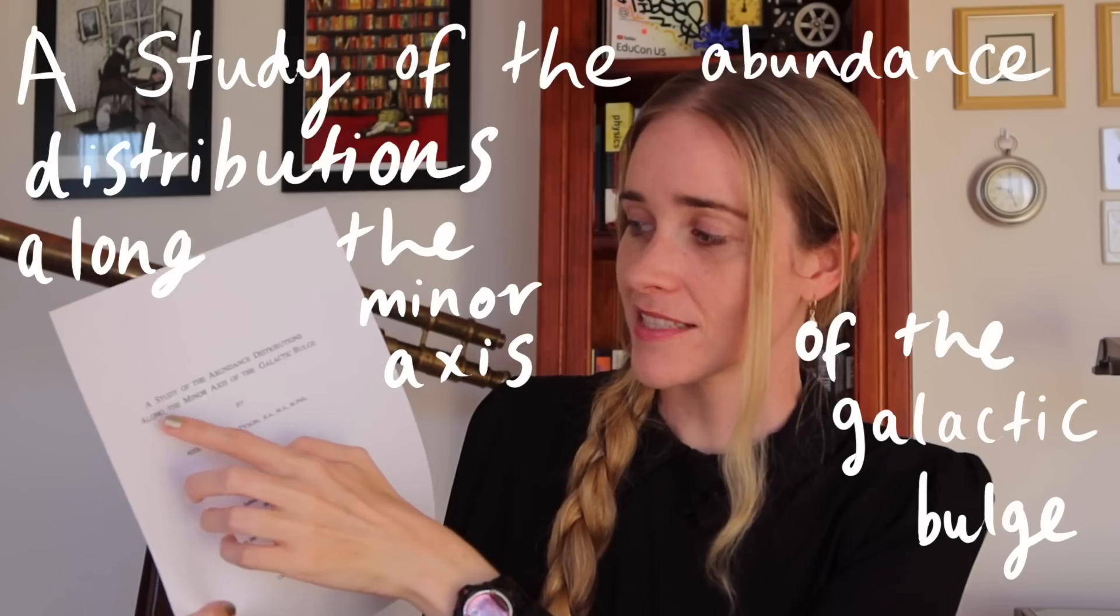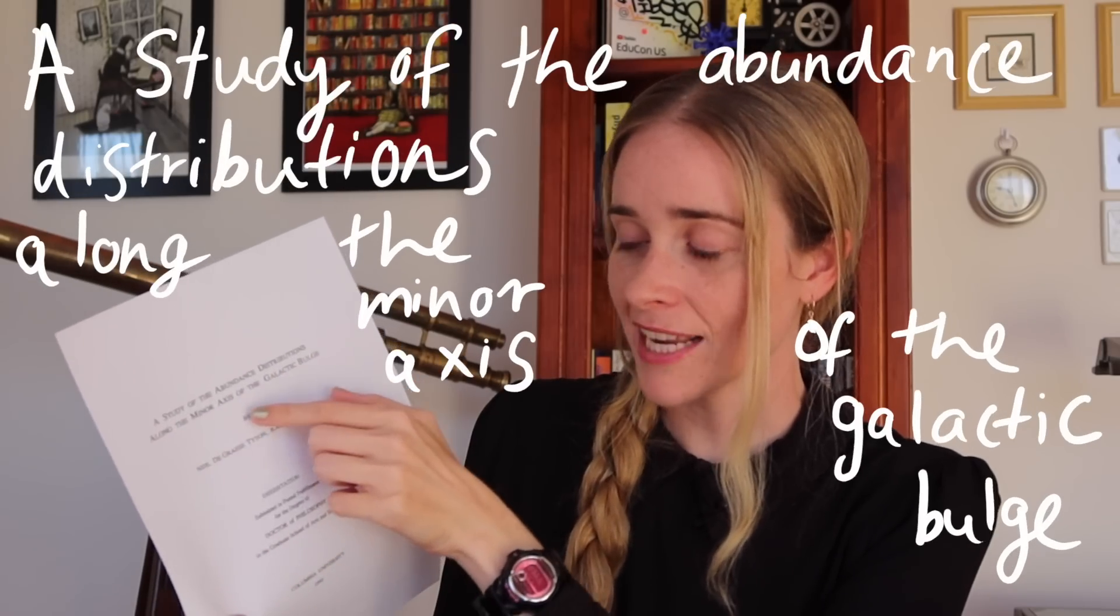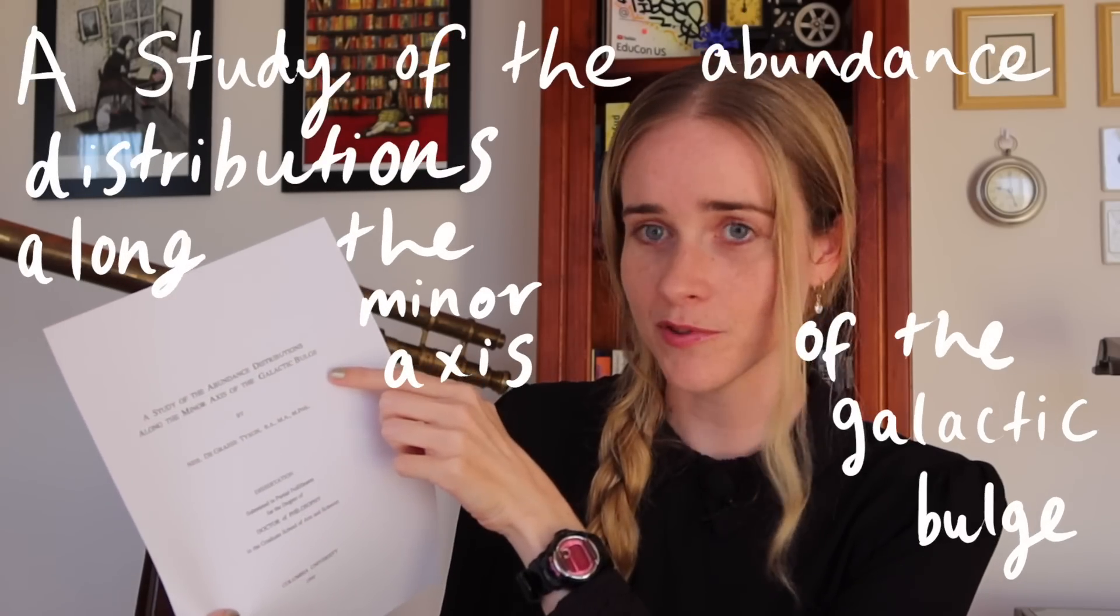For his second attempt at a PhD, this time at Columbia University, Tyson took a stab at understanding why the center of our galaxy is the way it is. His thesis has the title 'A Study of the Abundance Distributions Along the Minor Axis of the Galactic Bulge.' It was published in 1992 when he was 33. A PhD thesis or dissertation is an account of years of intense scientific research and it must contain an original contribution to human knowledge. So what was Tyson's?